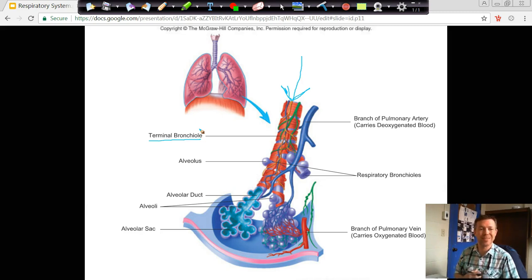The terminal bronchioles are the end of the respiratory tract, the end of our conducting pathway where we're just trying to move air from the outside environment towards the inside environment.